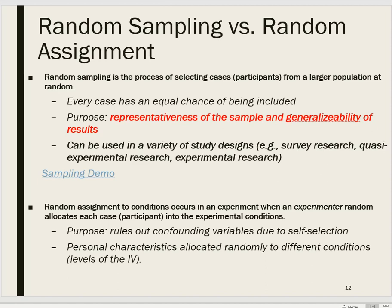Random sampling could potentially be used in any type of study design, but you're most likely to encounter it in survey research or polling research. Experimental research is less likely to use random sampling because of feasibility. If you select someone at random and tell them they must show up and participate in an experiment, the likelihood of them doing so is quite low, resulting in a huge non-response rate that would undermine the random sample.